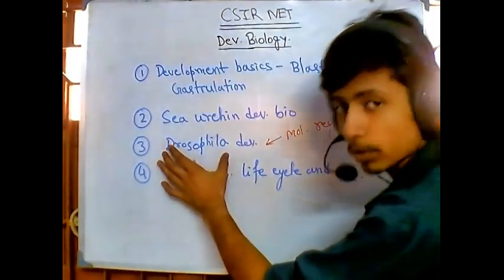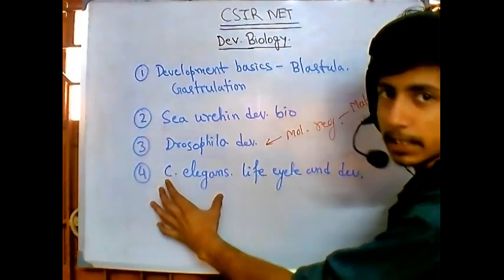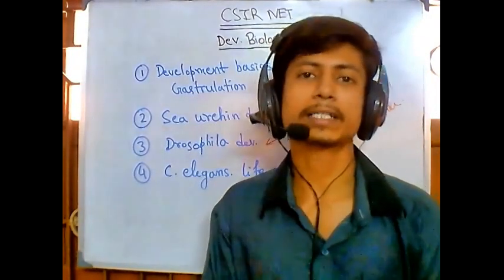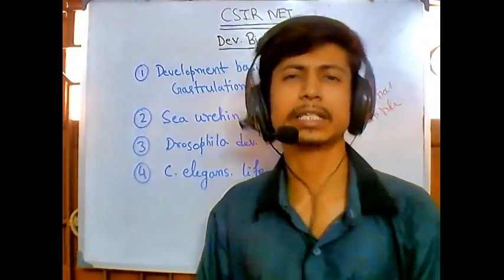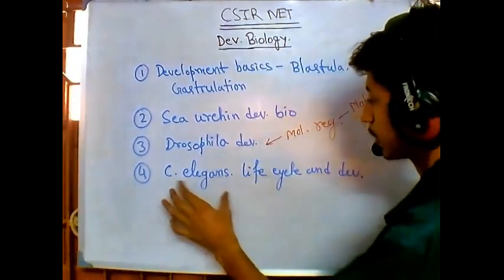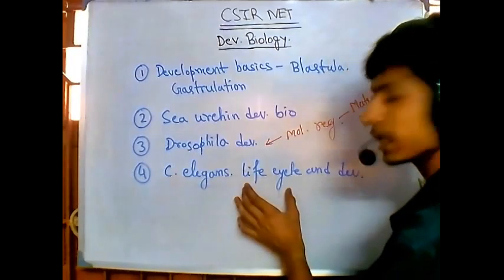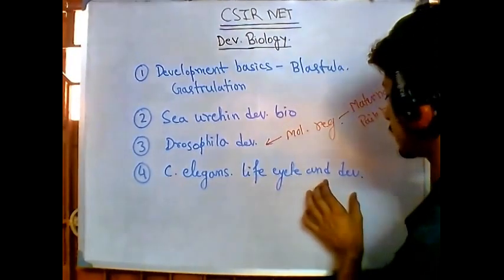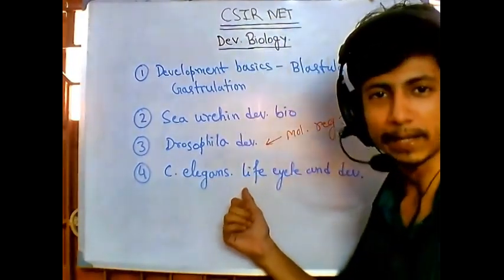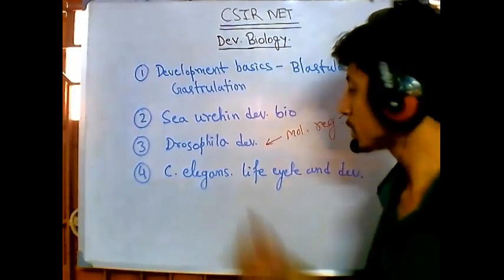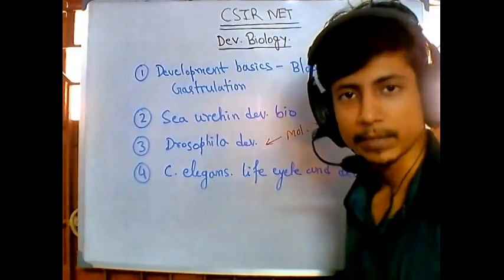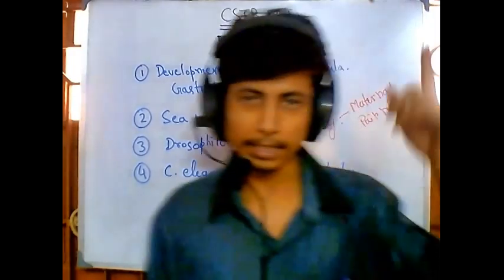Finally, C. elegans biology is essential. C. elegans is a model organism — it's actually a worm — widely used to study various biological techniques. You need to understand the life cycle of C. elegans as well as its development to a certain extent, because it has specific features in its development that no other organism actually shares. That makes it a very important topic.